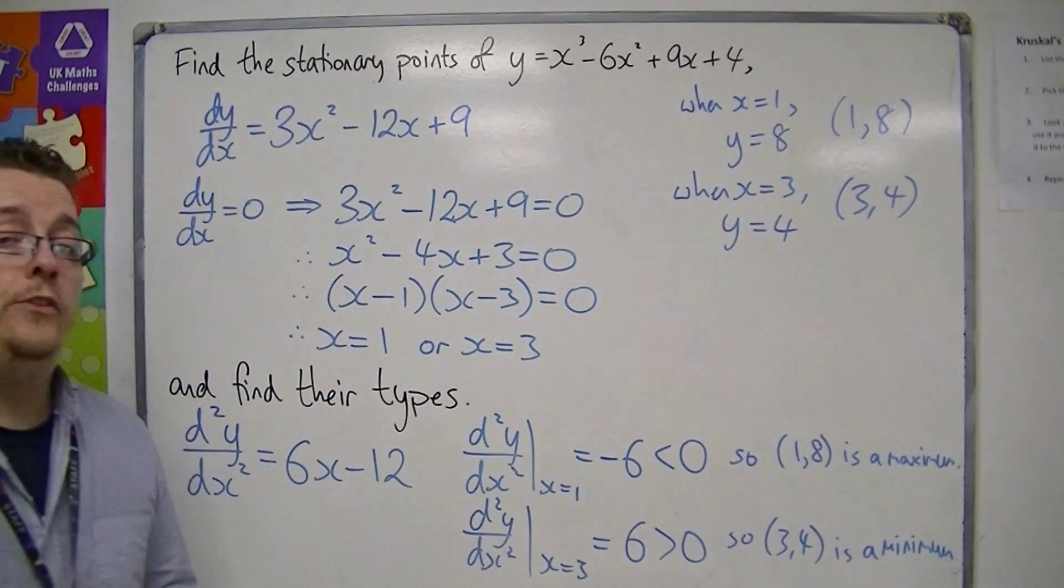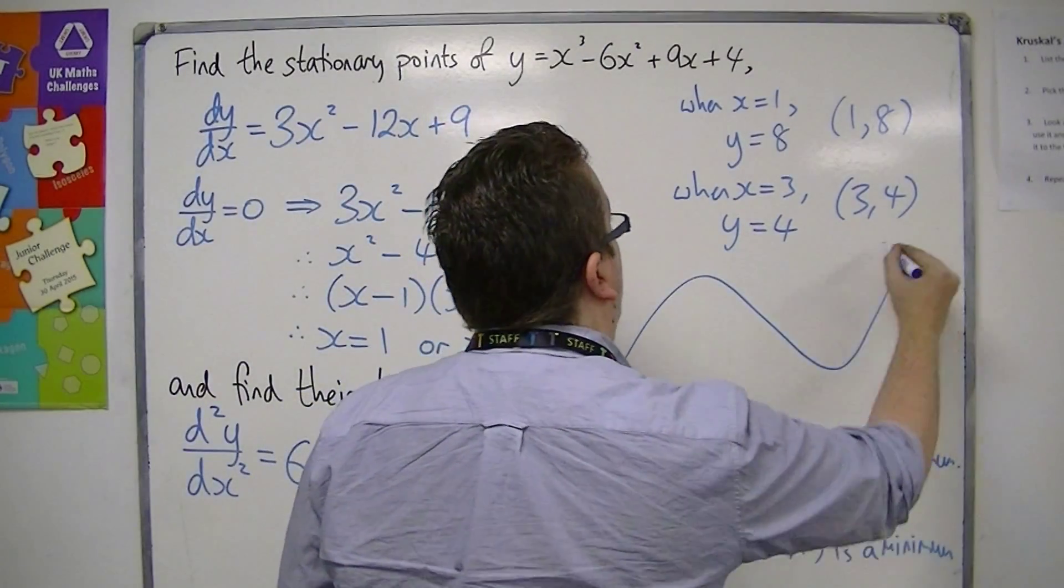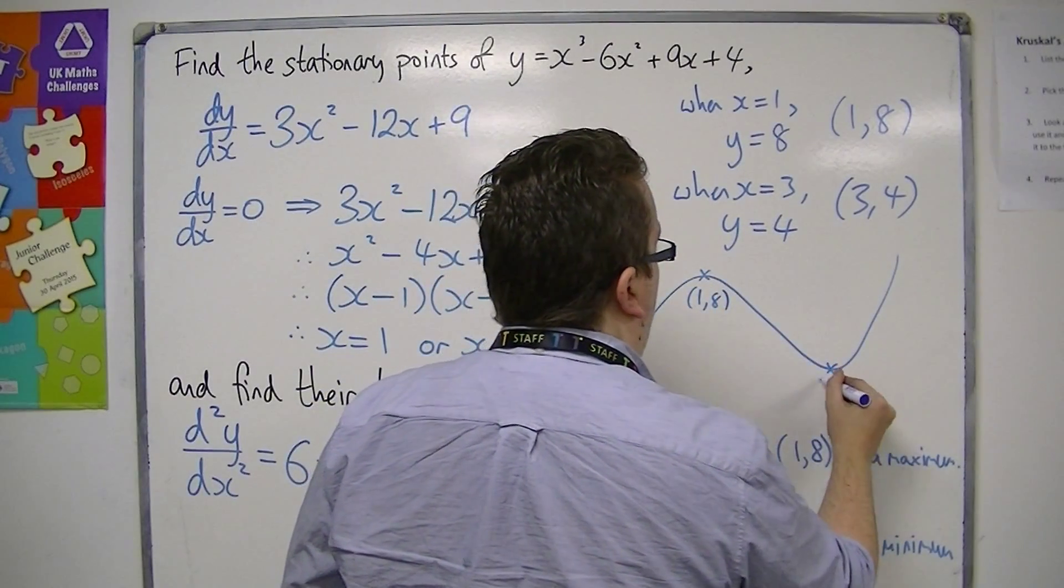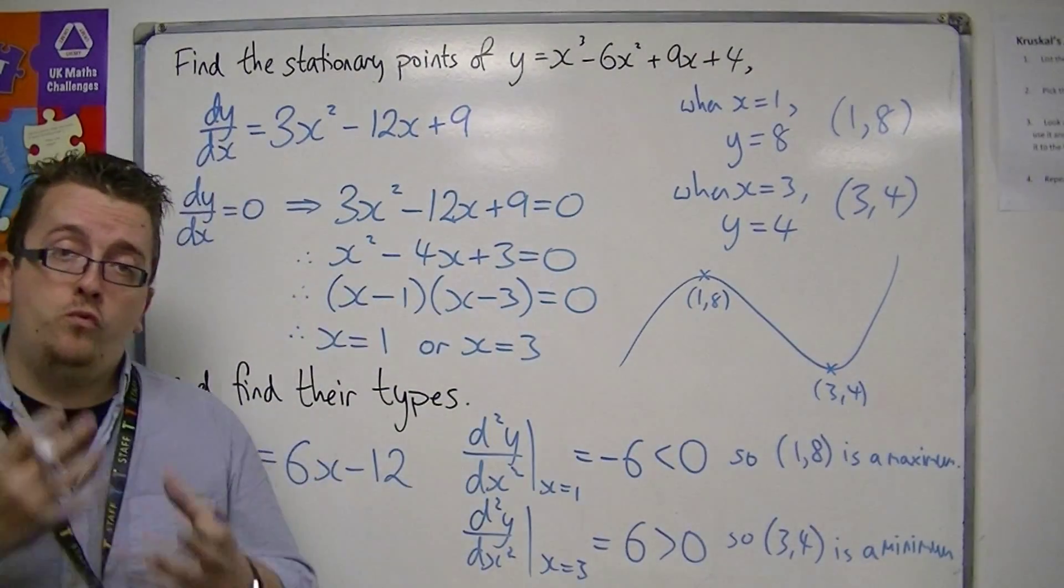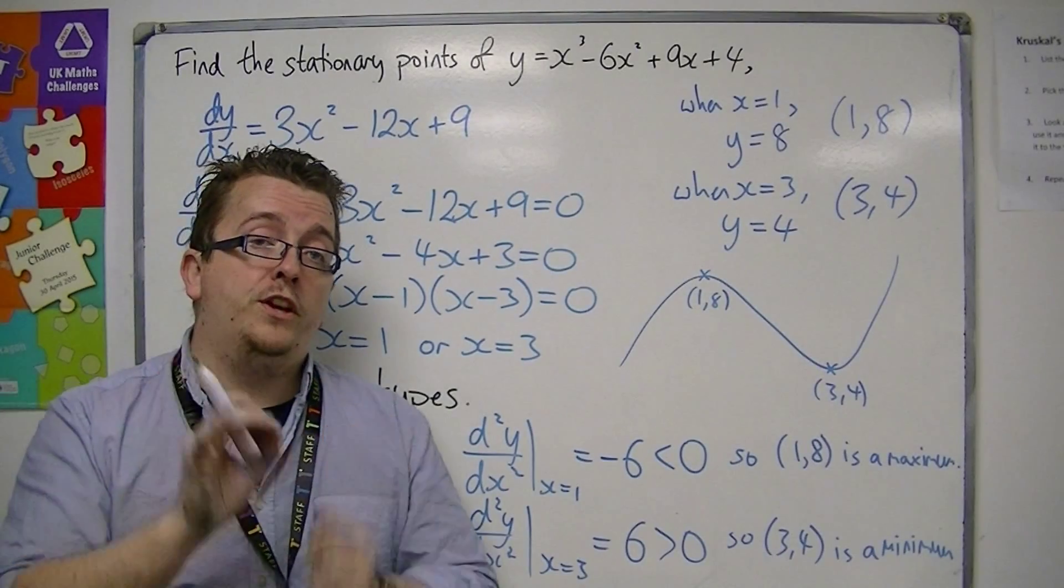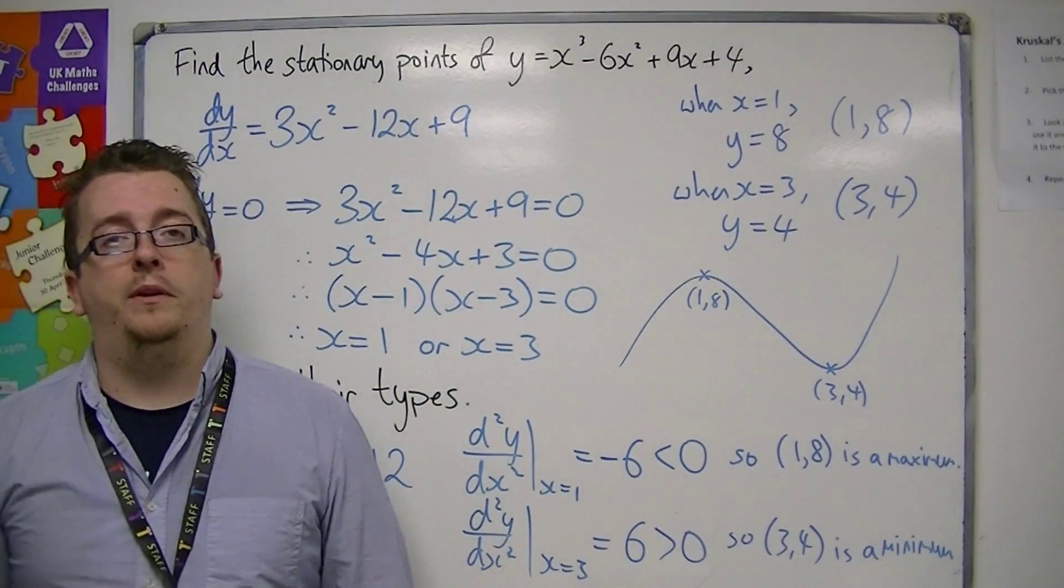Which means that we now know that the curve definitely has a maximum at (1,8) and a minimum at (3,4). So you can see that it really starts to hone our skill of identifying what the curve would look like. And that's how differentiation can really help us.